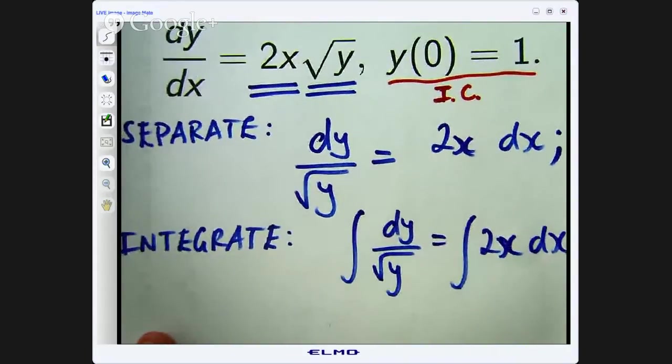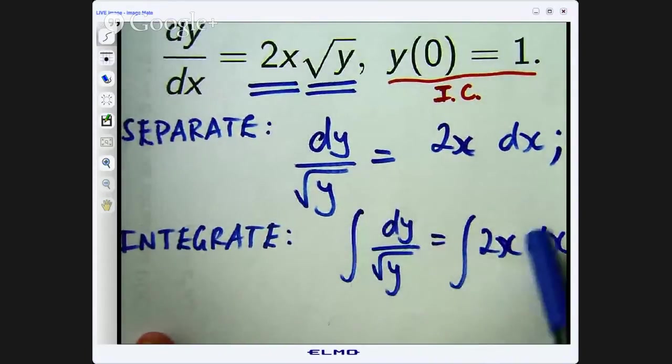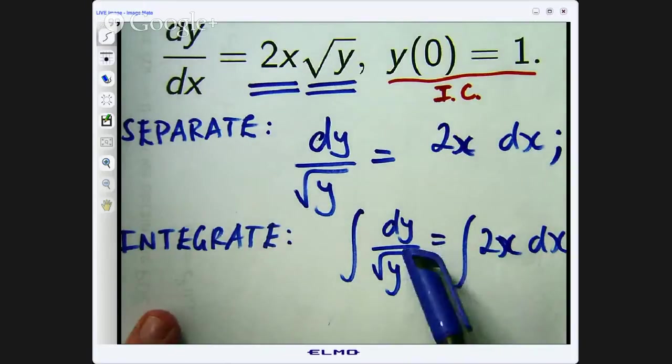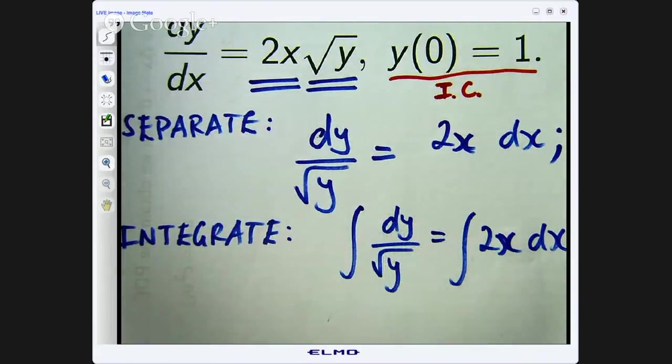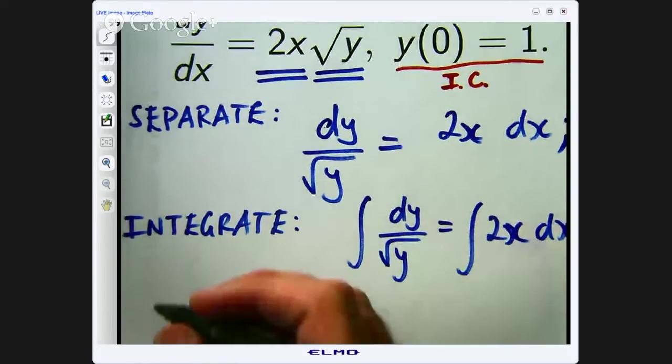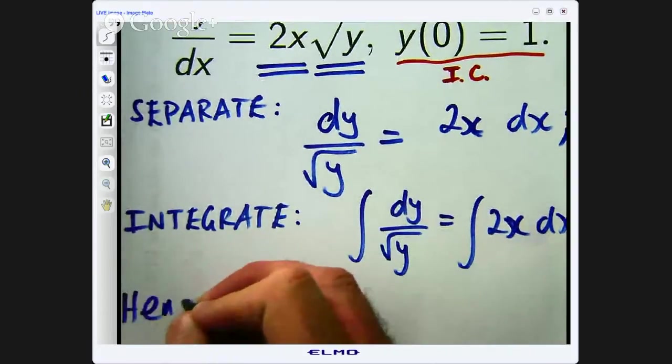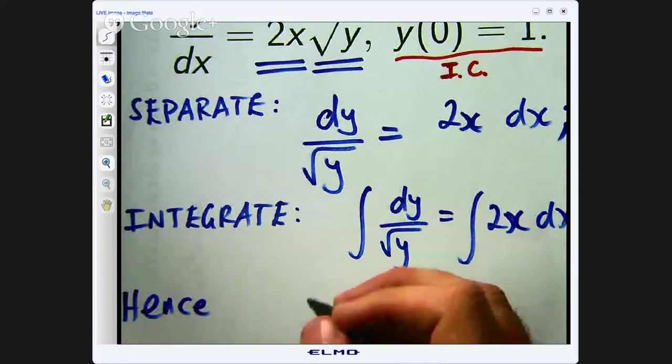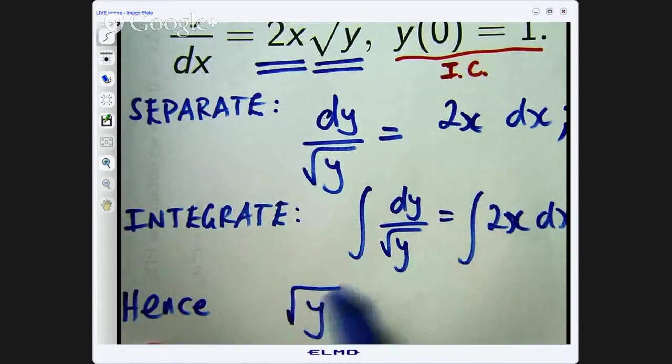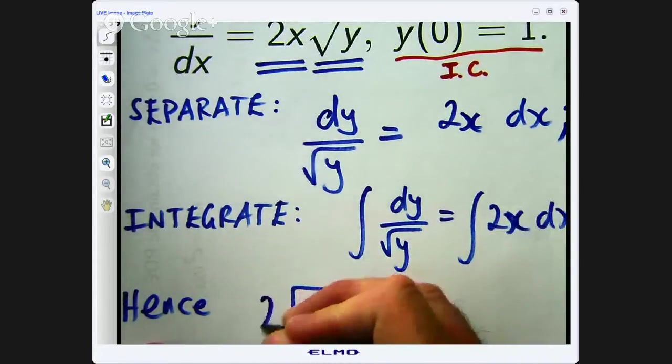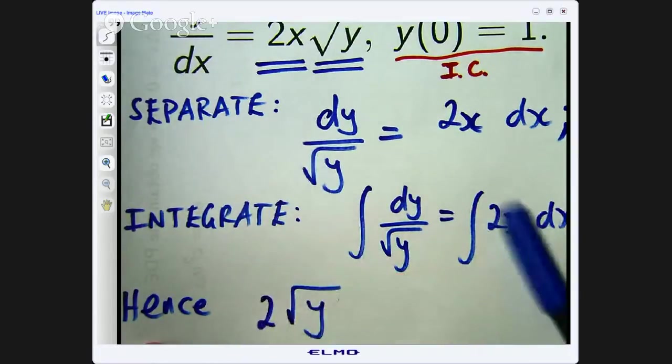Okay, so let us integrate over here, integrate over here and hopefully out will pop our unknown function y. So if I am integrating here, think of this as one on y to the half or y to the negative one half. If I integrate the left hand side I will get the following. So what will happen is I will get something like this and if I differentiate that I do not quite get that so because this is a power of half so I need to put in a 2 there. Over here I just get x squared.